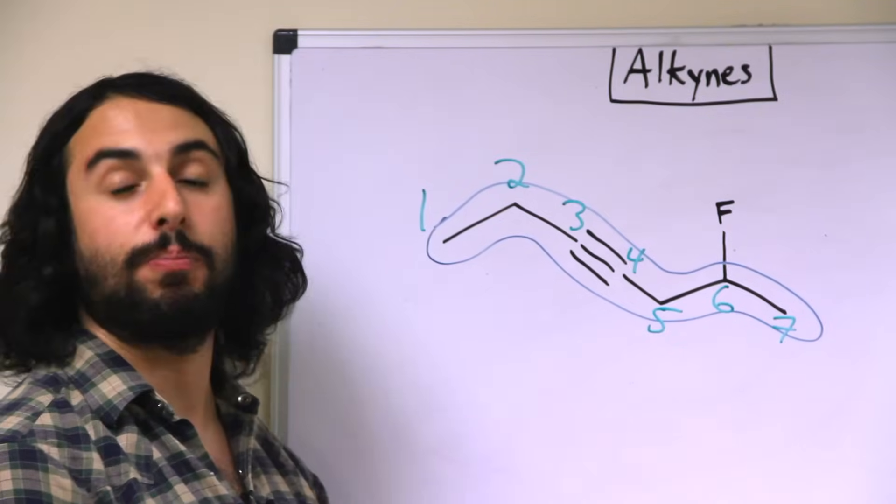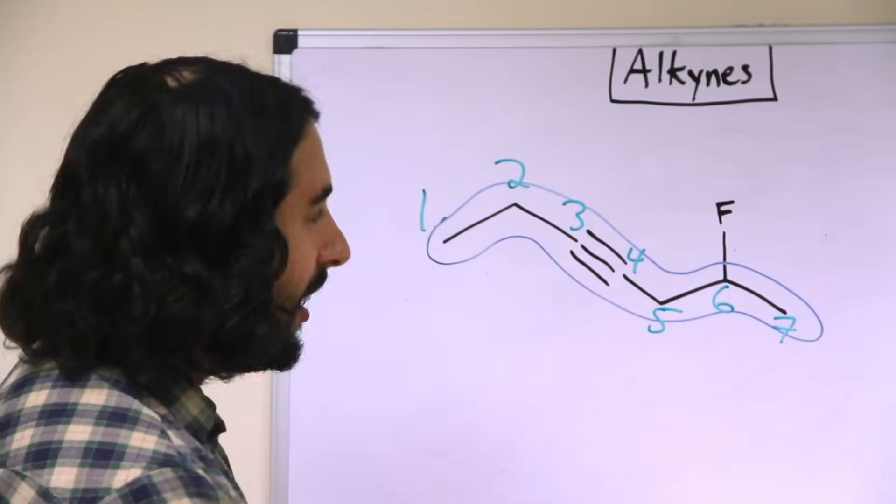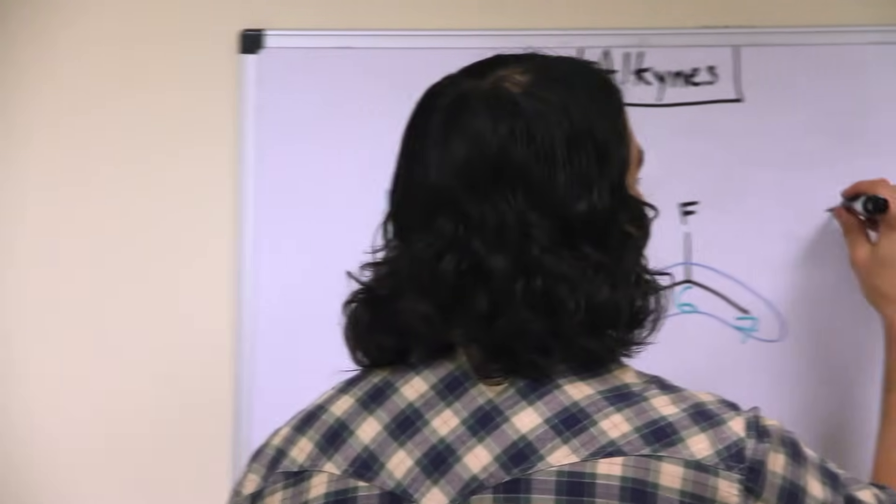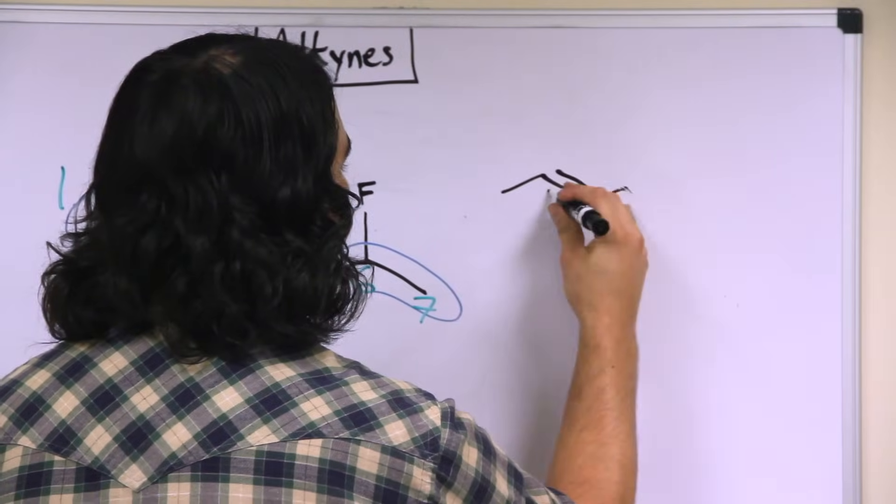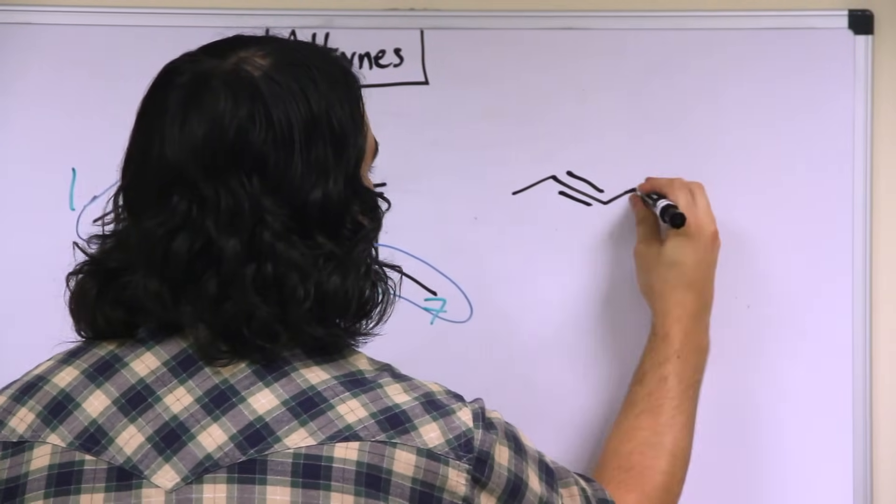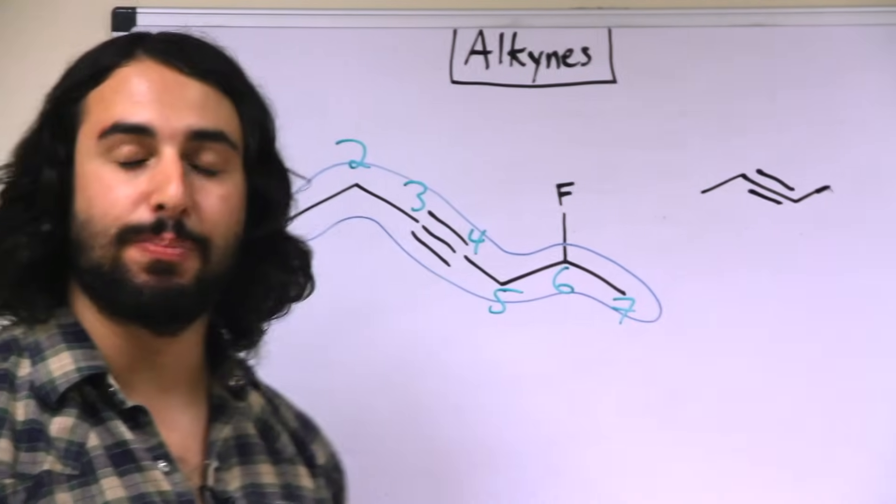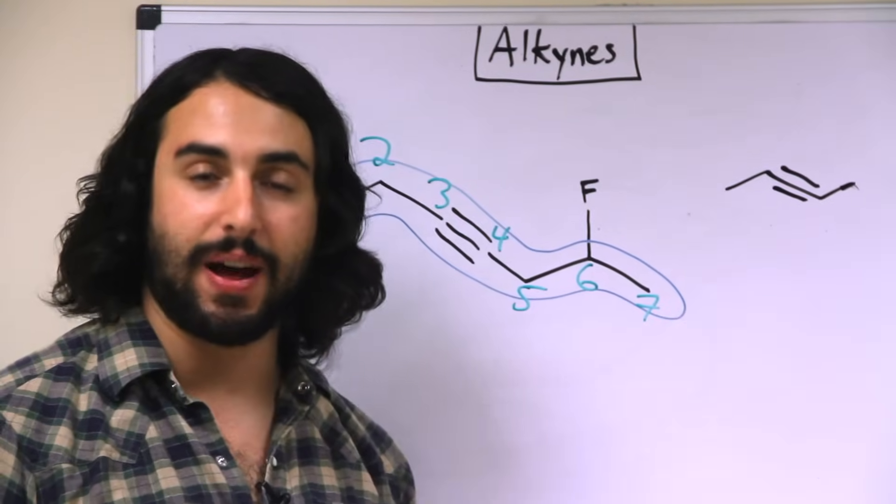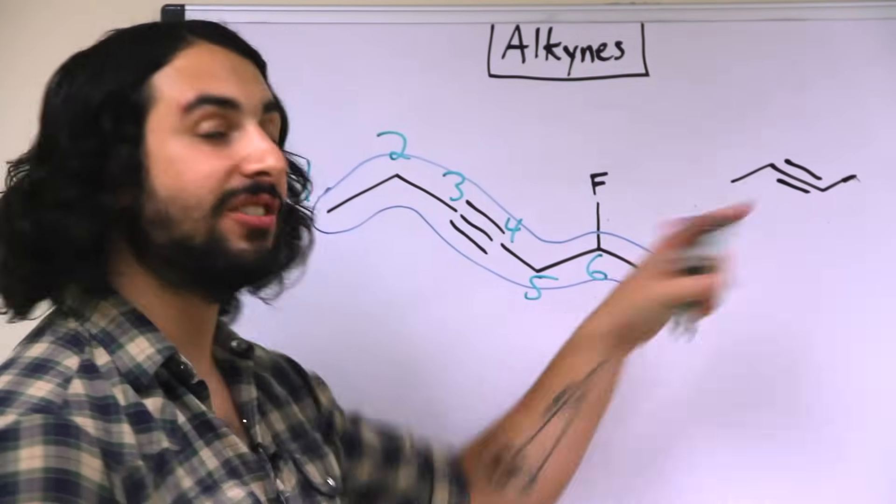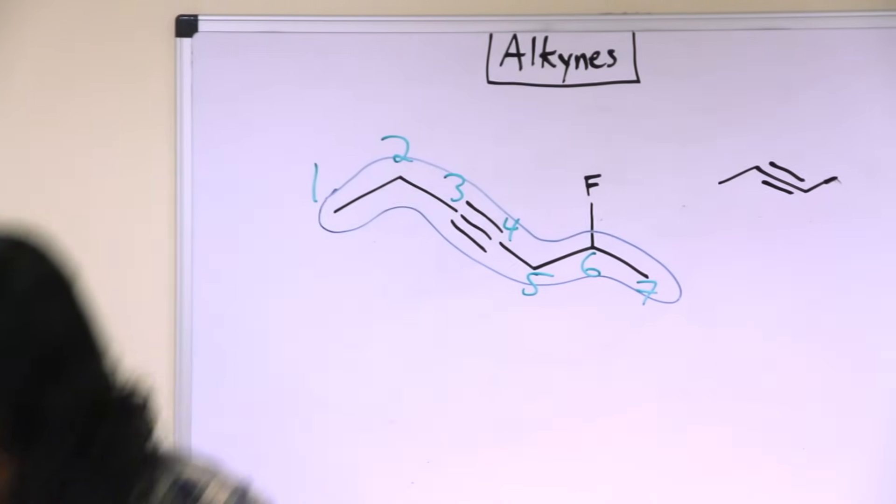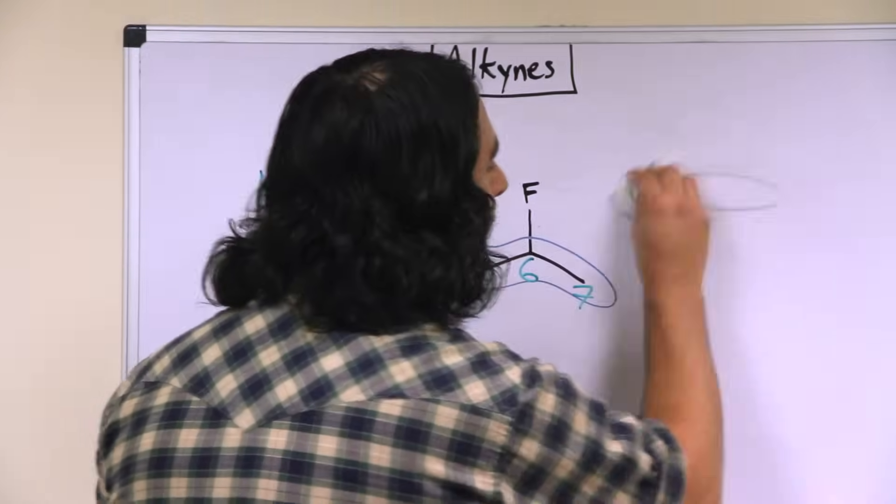And this is the appropriate way to draw an alkyne. A very common error I'll see is alkynes drawn like that. While you may still be able to provide or interpret the correct IUPAC name for the molecule, this is geometrically incorrect. So we prefer not to draw it that way.